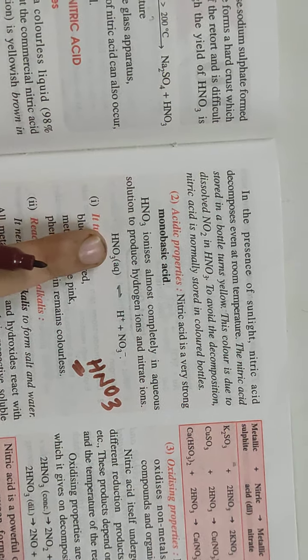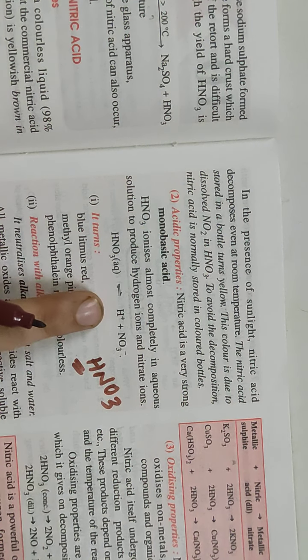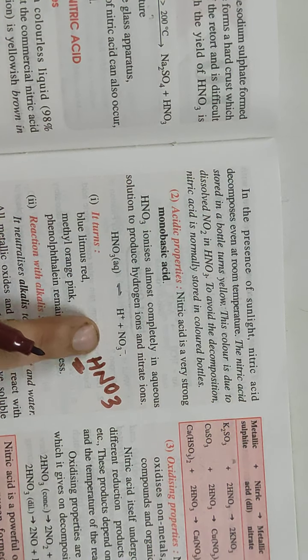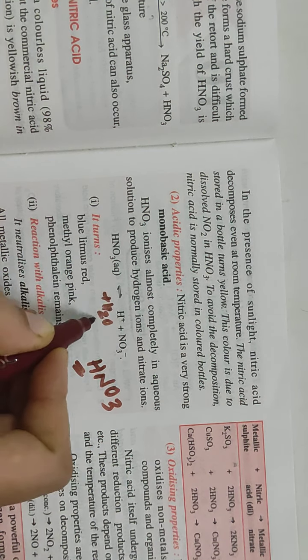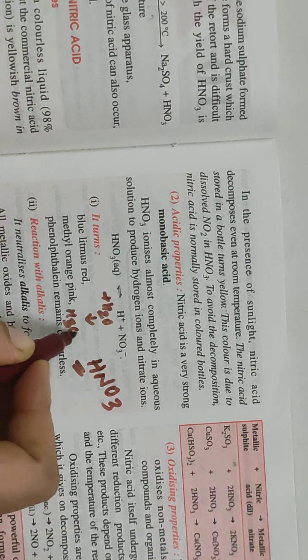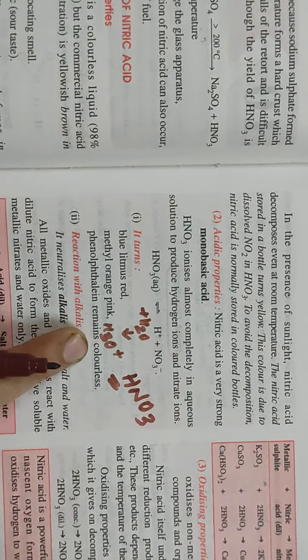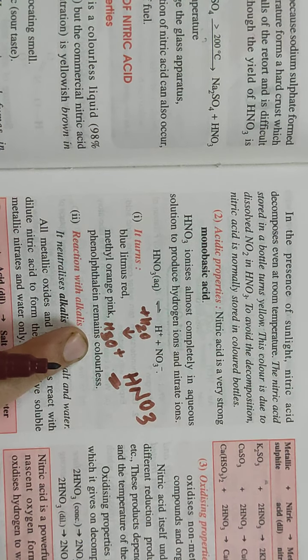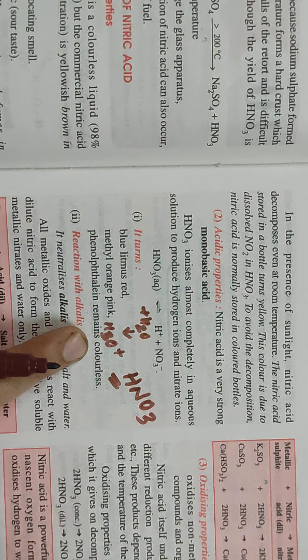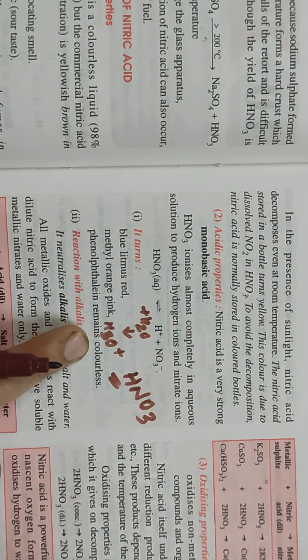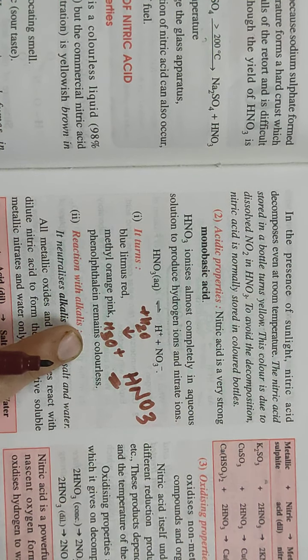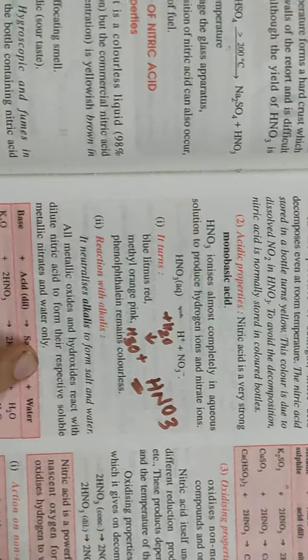HNO3 will decompose and we will get H+ and NO3-. This H+ will combine with water to give us H3O+. How many hydronium ions are we getting? One. So this is monobasic. If it gave 2 hydronium ions, that would be dibasic. If we got 3 hydronium ions, that would be tribasic. Just go through these acidic properties.